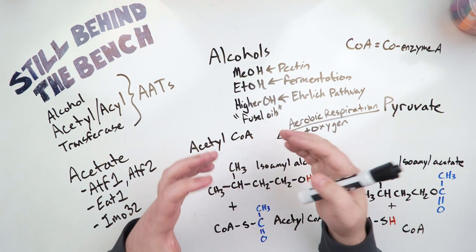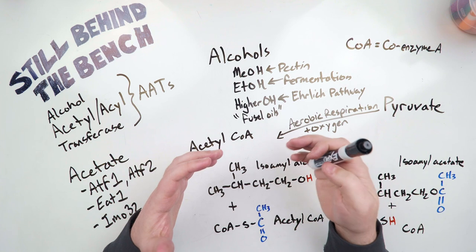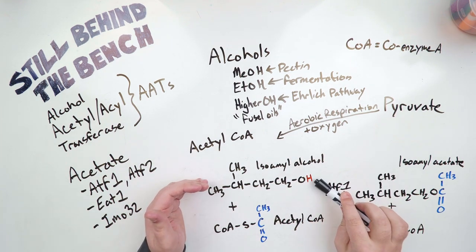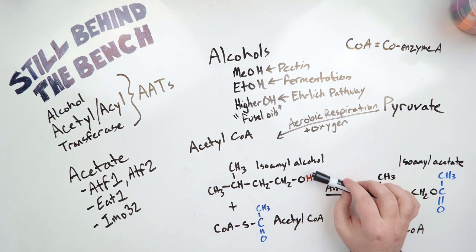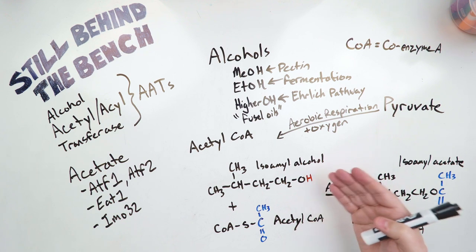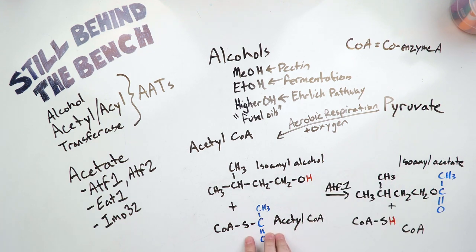I'm going to use isoamyl alcohol as my alcohol for this example. So here it is, isoamyl alcohol. The alcohol group here at the end is what defines this as an alcohol. I've colored the H in red simply because it's the pertinent part of the alcohol.